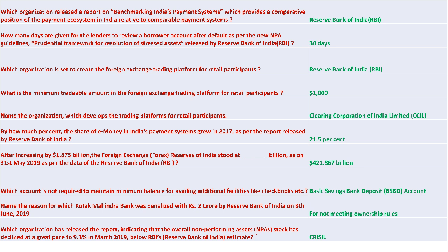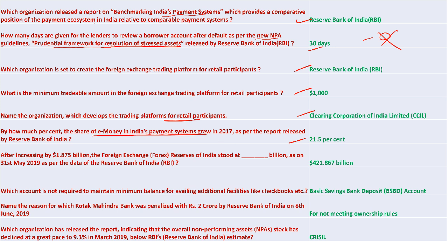RBI released the report 'Benchmarking Indian Payment System' providing the comparative position of India's payment ecosystem. As per the new NPA guidelines - Prudential Framework for Resolution of Stressed Assets - lenders have 30 days to review a borrower's account after default. RBI is set to create a foreign exchange trading platform for retail participants, with a minimum tradable amount of 1,000 dollars. Clearing Corporation of India Limited will set up the platform. The share of e-money in the Indian payment system grew 21.5% in 2017 as per the RBI report.